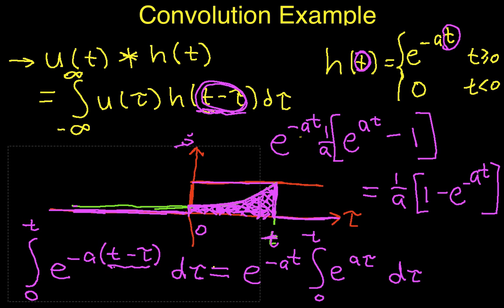So this then basically describes the final result that this convolution here is equal to 1 over a times 1 minus e to the minus a t when t is greater than zero and zero when t is less than zero.